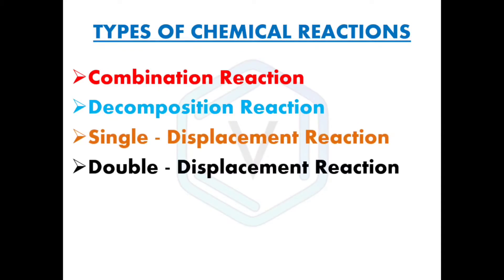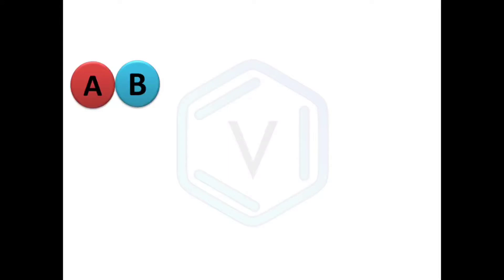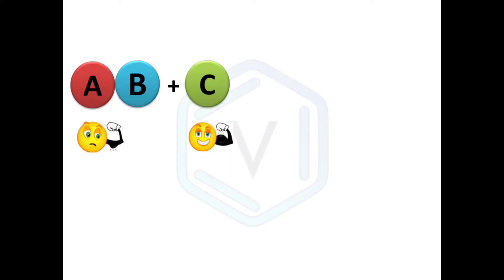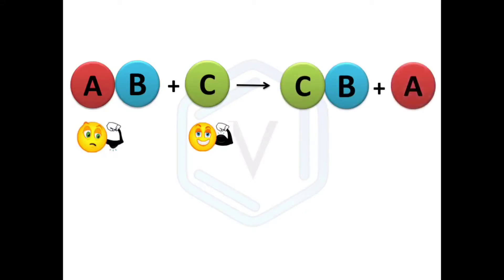In the last video I explained combination and decomposition reactions. Now consider a compound AB reacts with an element C. The reactivity of element A in compound AB and element C are different — A is less reactive than C. Because C is more reactive, it tries to replace element A in compound AB, giving products CB plus A. This type of reaction, where one element replaces another due to higher reactivity, is known as a single displacement reaction.